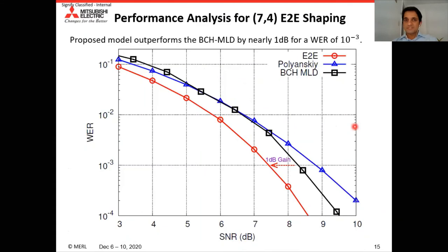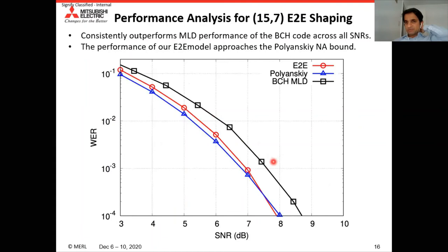Coming to performance analysis: this figure compares our end-to-end model with the Polanski bound and BCH-MLD on a WER versus SNR plot. The red plot — our end-to-end model — outperforms BCH-MLD (black) by 1 dB at WER of 10^-3, and also outperforms the Polanski bound, which is considered a loose bound at lower code lengths. For the 15x7 end-to-end system, our model again outperforms BCH-MLD at all SNRs and approaches the Polanski bound, clearly demonstrating a shaping gain from the proposed method on the AWGN channel.